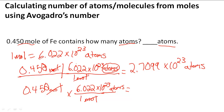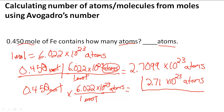Because we started out with three significant digits, we're going to round this to 2.71 times 10 to the 23rd atoms. And that is the answer to this question.